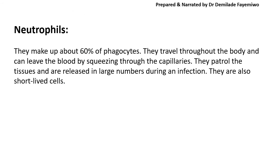The neutrophils make up about 60% of the phagocytes. Something interesting about them is that they are very short-lived cells, which explains why the bone marrow makes a lot of phagocytes continuously. Neutrophils basically travel throughout the body — they are like patrol cells. Think of your neighborhood security guard who always drives around just checking that everything is in order. The neutrophils patrol the tissues, and whenever there is an infection, they are produced in very large numbers.